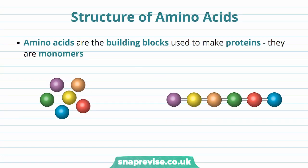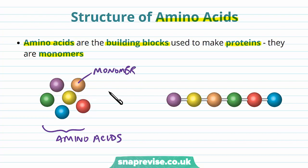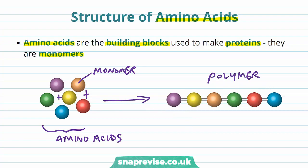We need to understand the chemical structure of amino acids. Amino acids are basically the building blocks used to make any of the proteins in the body — the amino acids are the monomers. There are lots of different types of amino acids. Individually each unit is a monomer, and if we add these together into a long chain we form a polymer.